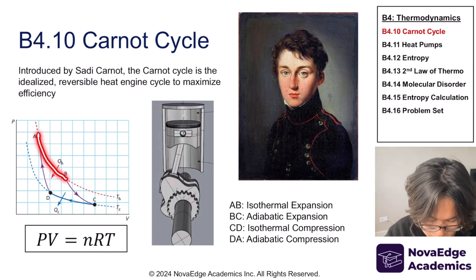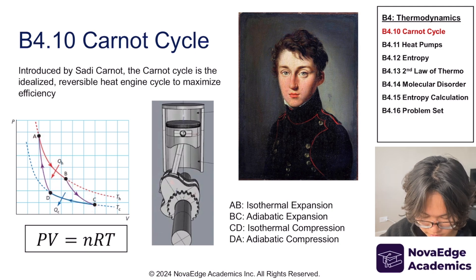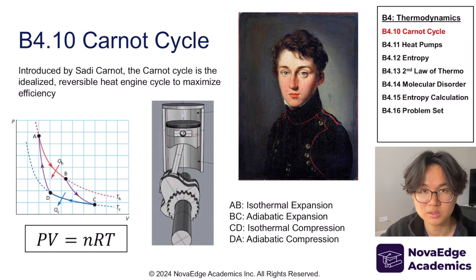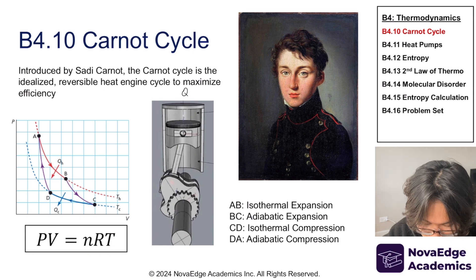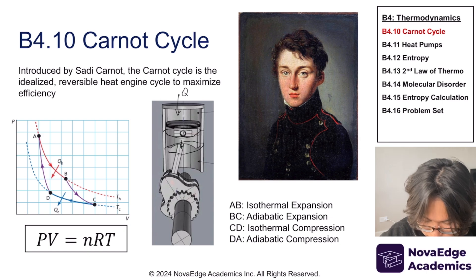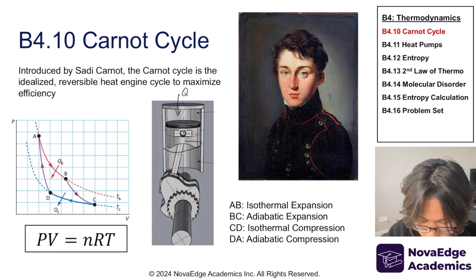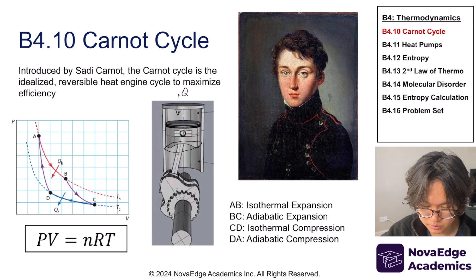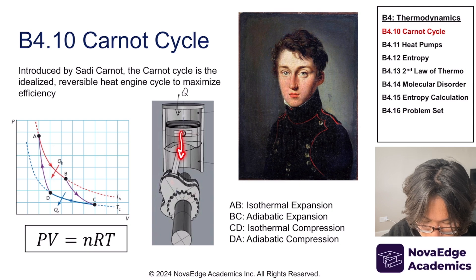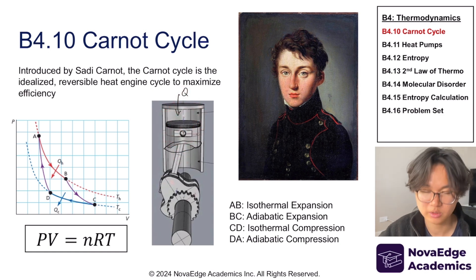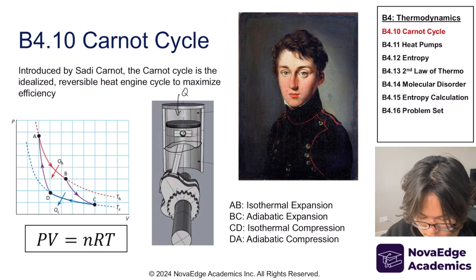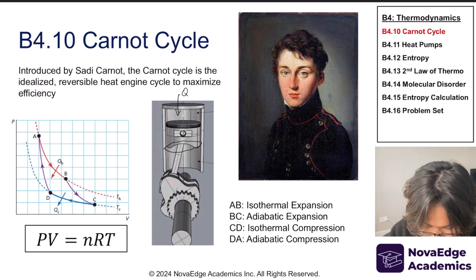The Carnot cycle goes from A to B, B to C, C to D, and D to A. First, A to B is an isothermal expansion — heat Q is supplied to the system, pushing the piston to about midway, and it does so isothermally. We've already discussed why isothermal processes aren't practical in the real world: it's nearly impossible to expand a gas and supply heat without changing the temperature of the gas. But remember, this is an idealized case, and the piston expands to position two.